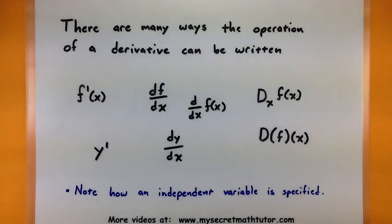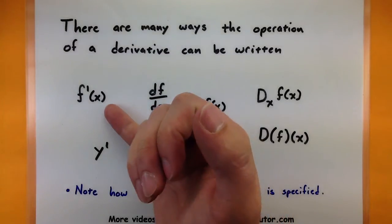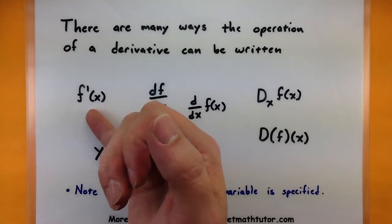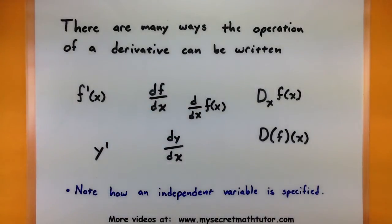The very first thing that I want you to know is that when you do a differentiation or you do a derivative, depending on the book you use or even just the instructor, there's many different ways that a derivative can be written. So I like to use this notation a lot that says f prime of x, that stands for the derivative of f, but you could see a few other things as well, like y prime would be the derivative of y.